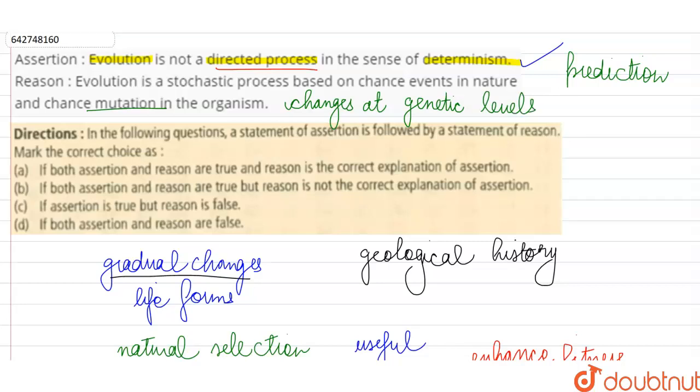These things can also lead to a change in the allele frequency or a change in the population composition. So the reason is also correct over here. Why are they saying evolution is not a directed process? Because it is based on chance events in nature and the chance mutation that takes place in the organism.